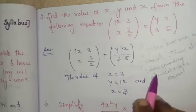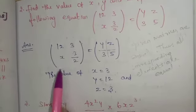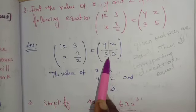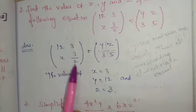Thus all corresponding elements are equal. The value of X is equal to 3, Y is equal to 12, and Z is equal to 3/2.